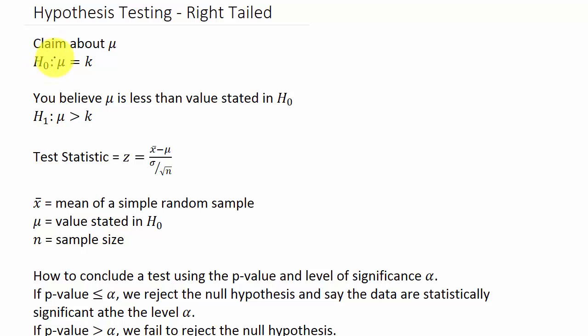Here we have the null hypothesis. We have the claim about mu, the population mean, so the null hypothesis is mu equals k, whatever k is. The alternate hypothesis: we believe that mu is greater than the value stated in the null. So the alternate hypothesis is mu is greater than k.